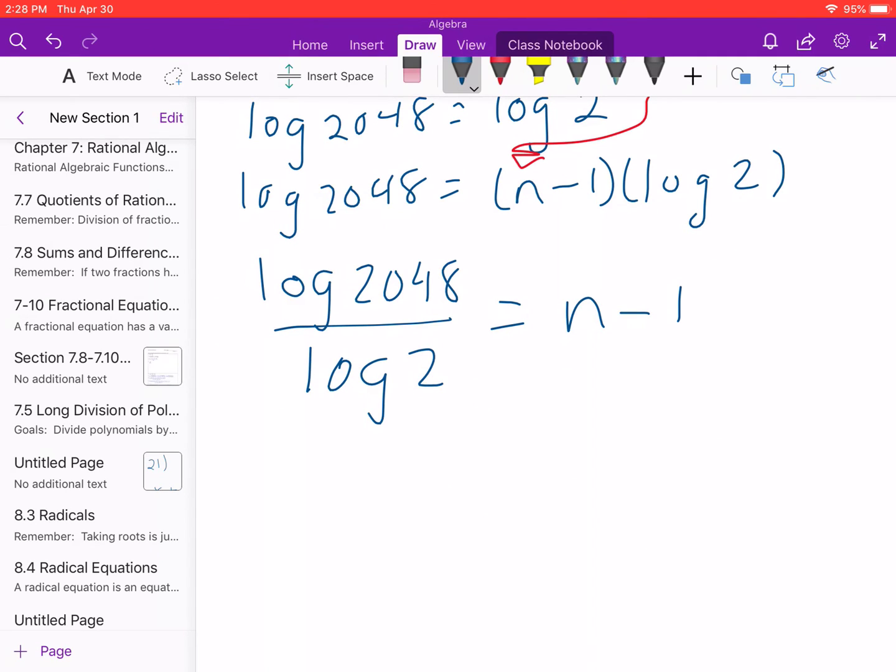This simplifies on the left to 11 equals n minus 1, and I'm left with 12 equals n.